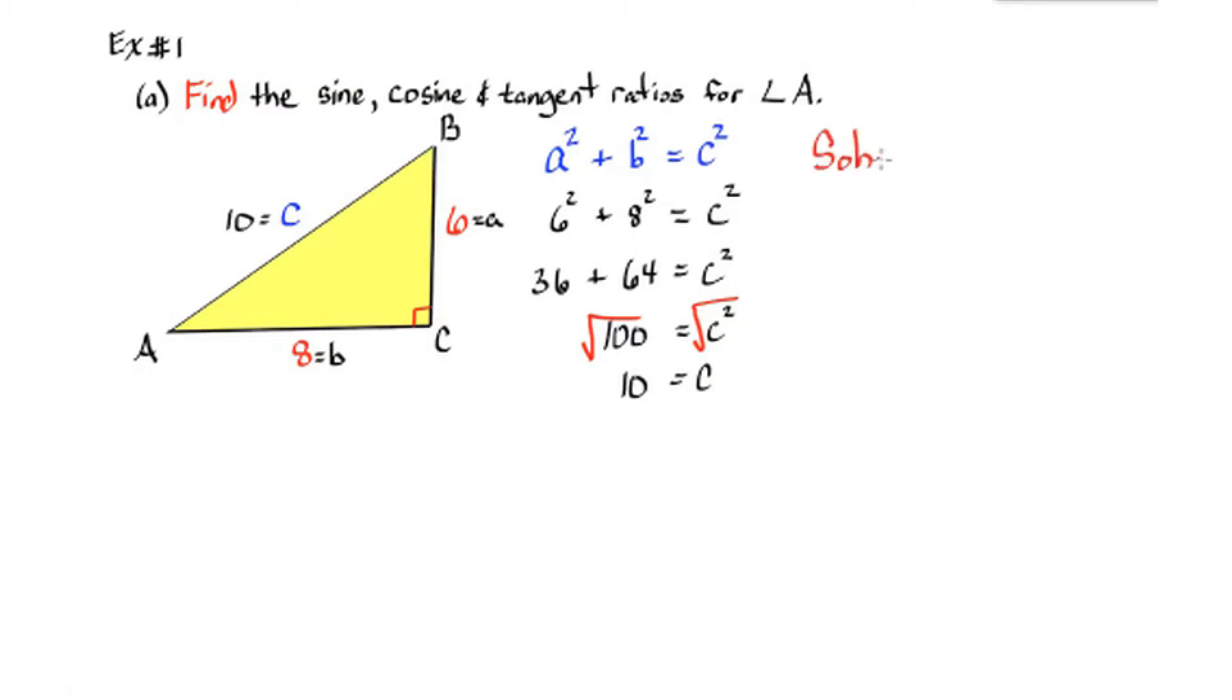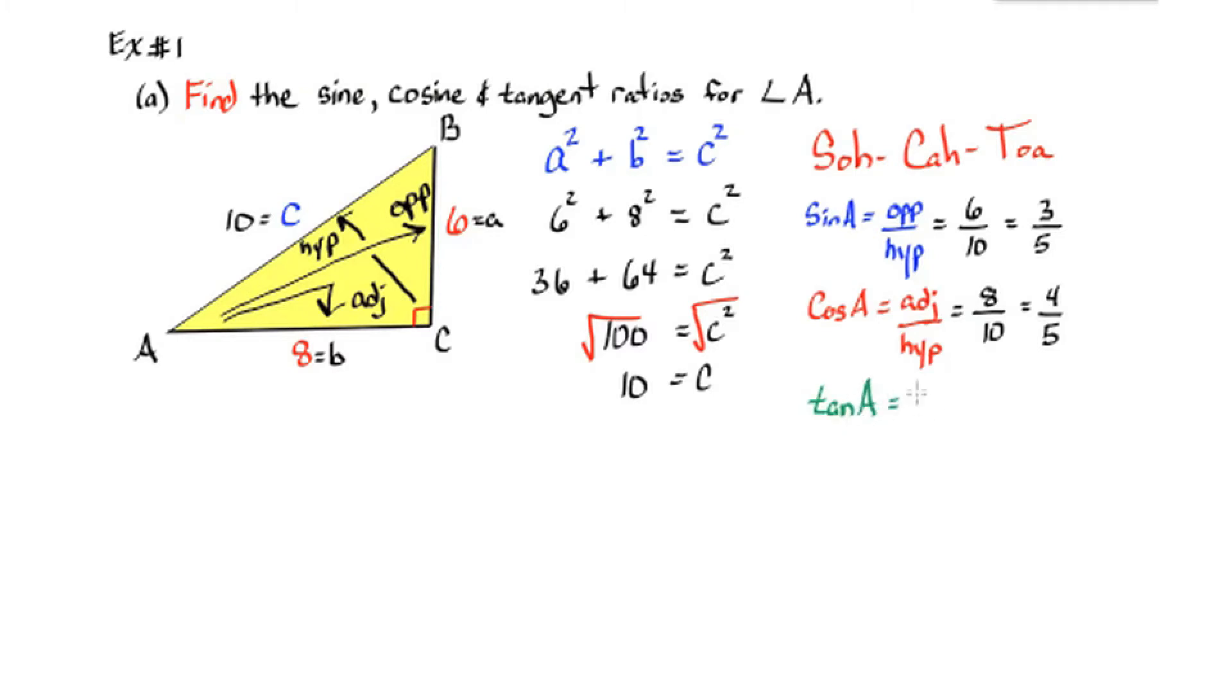Now I can use SOHCAHTOA to find all the ratios for angle A. So the opposite side is 6 and the adjacent side is 8 from angle A. So sine equals the opposite side over the hypotenuse, which equals 6 over 10, which simplifies to 3 fifths. Cosine of angle A is the adjacent leg over the hypotenuse, which is 8 over 10, which simplifies to 4 fifths. Tangent is the opposite leg over the adjacent leg, which is 6 over 8, or 3 fourths.